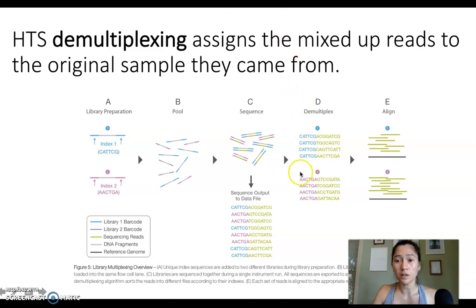If we pick up here in this schematic with part D, demultiplexing, what demultiplexing is is essentially using that unique barcode that we added to sample one and the unique barcode we added to sample two to separate out the reads that came from each of those different individual samples.